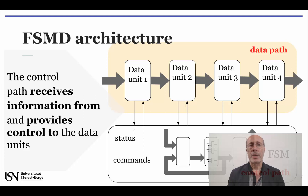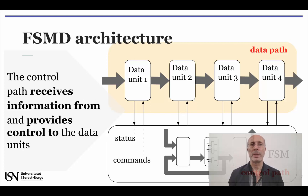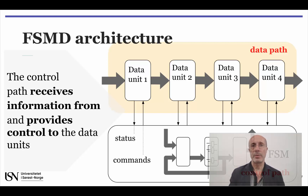This slide shows a block diagram representing the architecture of an FSMD. Notice the control path at the bottom, made up of a finite state machine, and several data units comprised in the datapath represented on top. Data units can be any type of combinational or sequential circuits, including other finite state machines. It is also important to notice that the datapath and the control path exchange information through the inputs and outputs shown. The data units provide information about the operations taking place in the datapath, and the control path provides commands determining what operations should be performed.